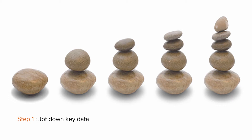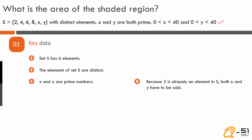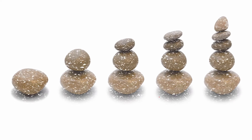Step 1 is to jot down key data. The set has six distinct elements, so x and y must differ from each other and from 2, 4, 6, and 8. Both x and y are prime. Since 2 is already in the set, x and y must be primes other than 2, and any prime other than 2 is odd. So both x and y are odd prime numbers taking values between 3 and 37 (the largest prime less than 40).